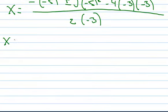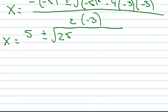Let's work this down. So negative negative 5, that becomes positive 5. Plus or minus, and in the radical, negative 5 squared is 25. 4 times 3 is 12, 12 times 3 is 36. A negative times a negative is a positive, times a negative is a negative. So that becomes negative 36. All over, 2 times 3 is negative 6.